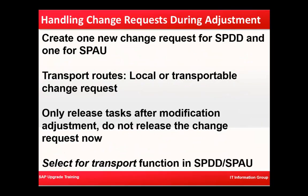Handling change requests during adjustment: create one new change request for SPDD and one for SPAU. The transport route could be local or a transportable change request. Only release the task after modification adjustment is complete — do not release the change request now.